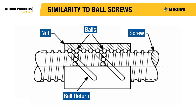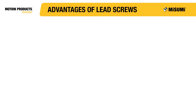Lead screws and ball screws are very similar components — both convert rotary motion into linear motion in effectively the same way. The difference is that while the lead screw has the nut slide over the screw shaft, the ball screw has the nut roll over the screw shaft on a recirculating ball bearing mechanism. Relying on rolling friction instead of sliding friction makes ball screws extremely efficient, allowing for tighter tolerances including preloading, resulting in accurate movement. It also allows for predictability of lifespan in high-speed applications, but the recirculating ball mechanism adds complexity and cost, and they can also generate more noise in use.